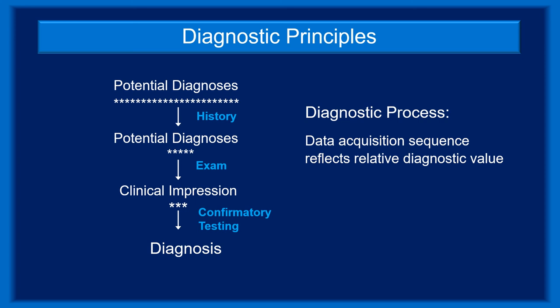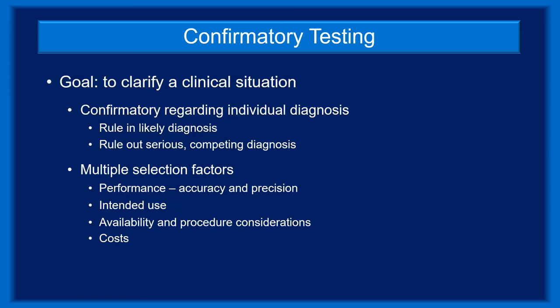In situations where the final diagnosis remains uncertain, confirmatory testing is often used to sort things out. Clinicians use a combination of pattern recognition and hypothetical deductive reasoning to arrive at a diagnosis. Pattern recognition is a common diagnostic heuristic that allows clinicians to quickly identify the correct diagnosis. Hypothetico-deductive reasoning poses a series of hypotheses until we have a definitive clinical impression. Although diagnostic testing is one component of the process, in many encounters, clinicians are able to reach a diagnosis without ordering any lab tests.